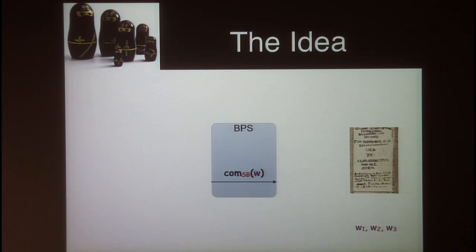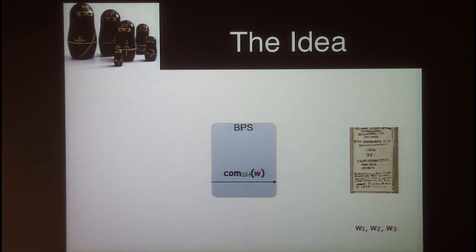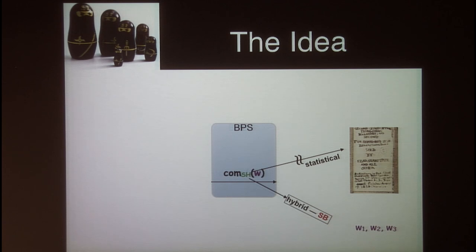The observation on the BPS protocol's proof of security is that the statistical binding property of the commitment scheme is essential to prove witness extractability, but it is not so crucial to prove simulatability. Hence, the idea is to replace this commitment scheme from statistically binding to statistically hiding, so that we can easily establish statistical simulatability. Then to prove witness extractability, we move to a hybrid where the commitment scheme changes from statistically hiding to statistically binding, and from there we complete the proof.